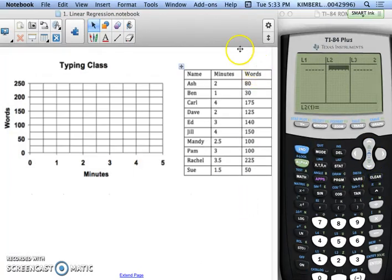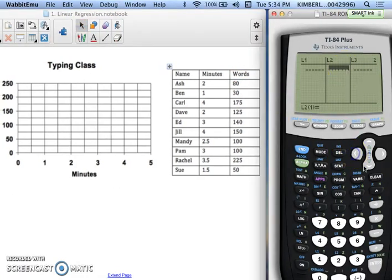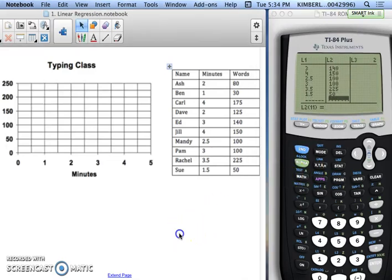I'm going to turn it to this slide over here so I can get this table, but you're going to type in your data. So 2, 1, 4, 2, 3, 4, 2.5, 3, 3.5, and 1.5. Hop over to the L2 column: 80, 30, 175, 125, 140, 150, 100, 100, 225, and 50. Alright, so once you type that data in, the first thing it wants you to do is to determine the correlation coefficient.